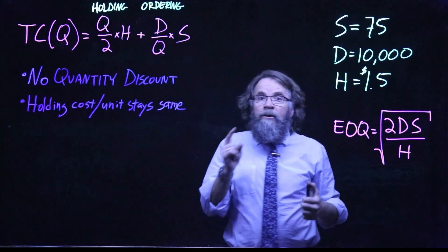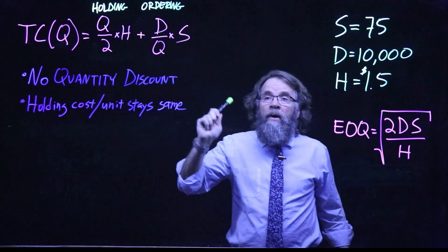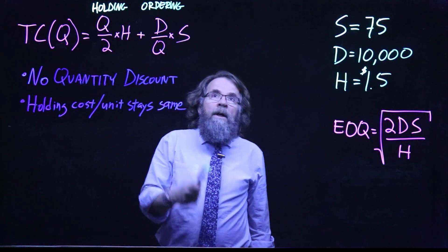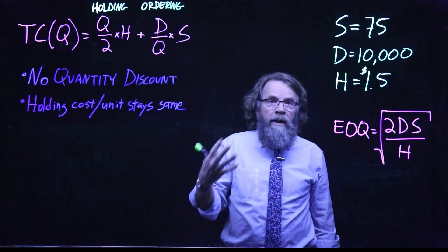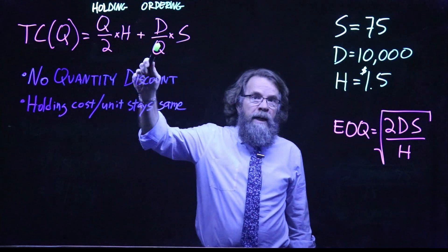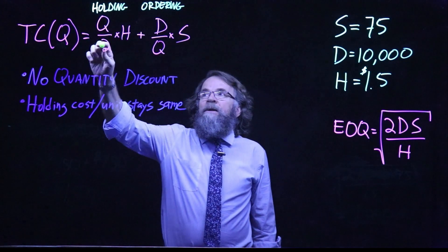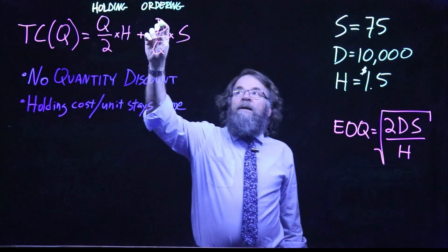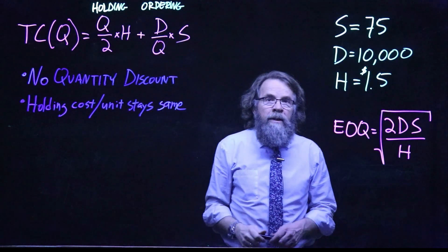Now we are assuming two things here. One is that there is no quantity discount. The price is always the same and that is why we do not need to consider the costs of the item in our calculations. We are only looking at the holding cost and the ordering cost in this formula. The holding cost is the order size divided by two times the holding cost per unit, and the ordering cost is the annual demand divided by the order size times the cost of placing the order.